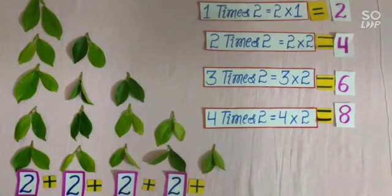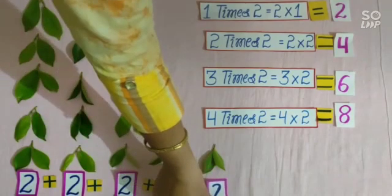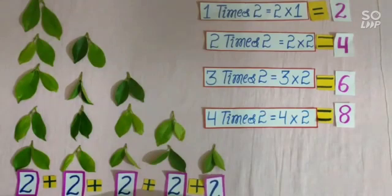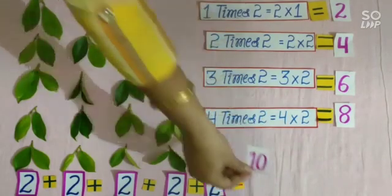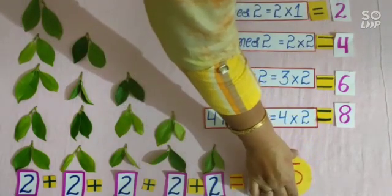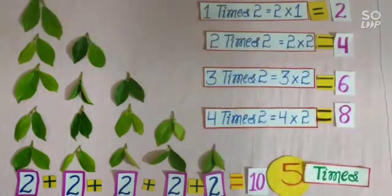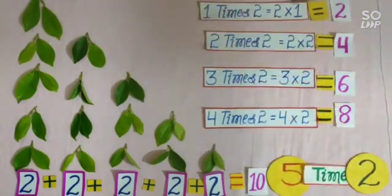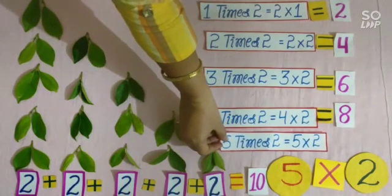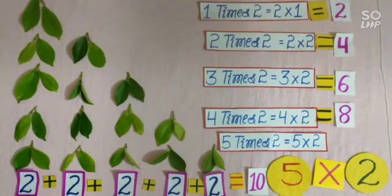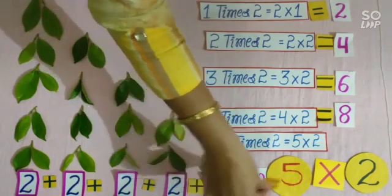Students, earlier we had 4 groups of 8 leaves. Now we take 2 more leaves. Now students, the number of leaves are 10, and we have 5 groups of leaves. So students, we will write here: 5 times 2 is equal to 5 multiplied by 2 is equal to 10.